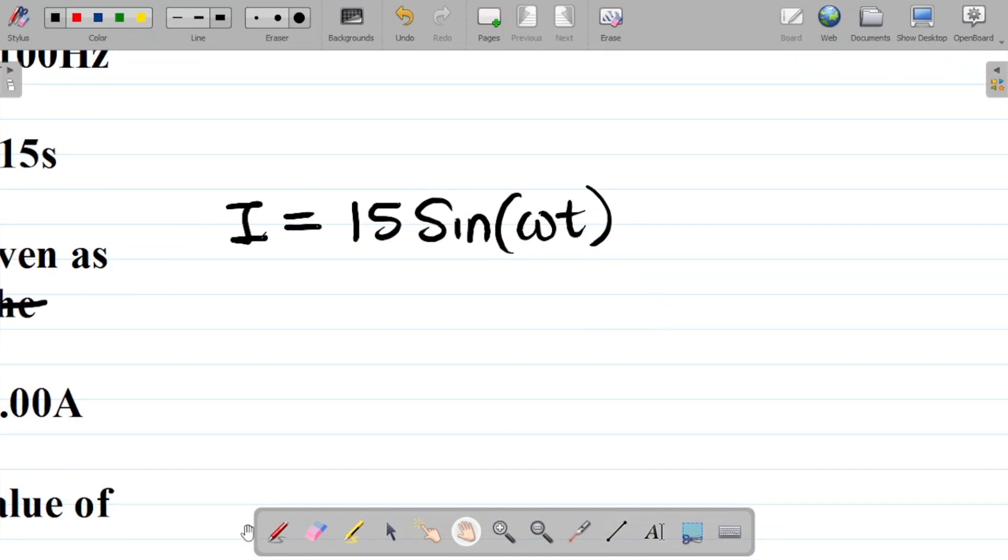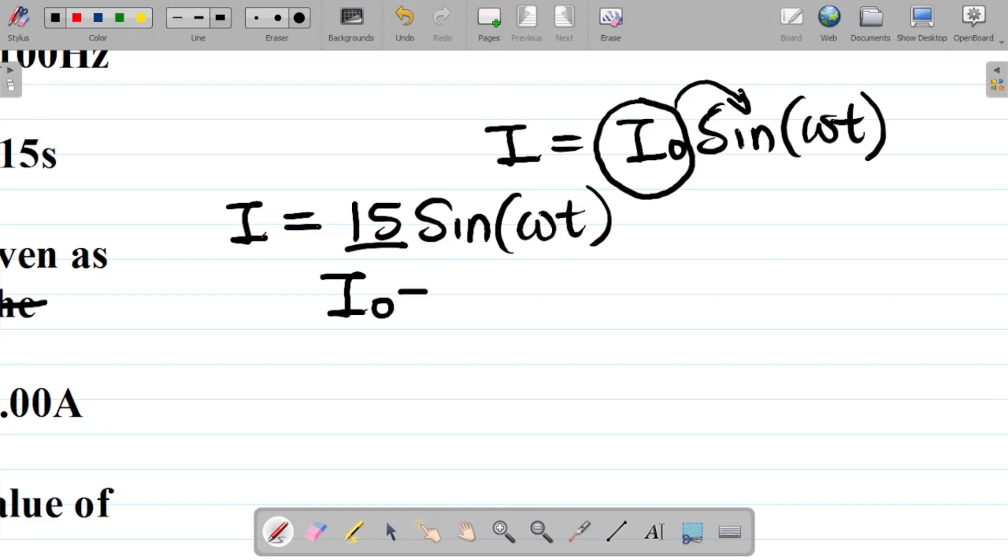Here's the first thing you should note. For the current equation, you have that the current I is equal to I naught sine omega t. Whatever value you have here before the sine omega t is usually the peak value. From this, we can see that the value before the sine omega t is 15. So the peak value I naught is equal to 15 amperes.